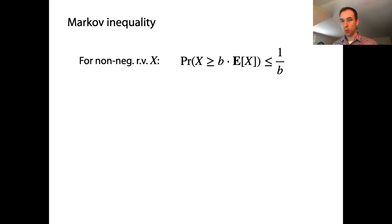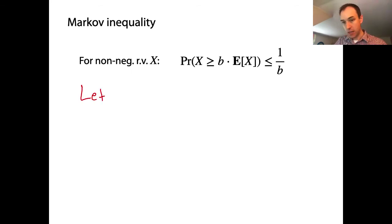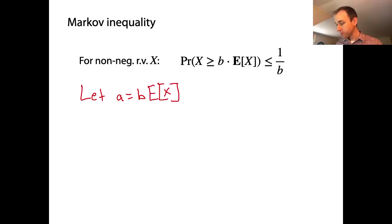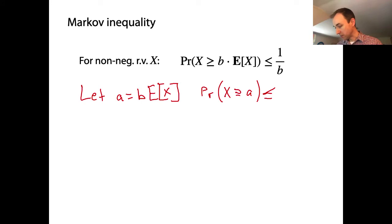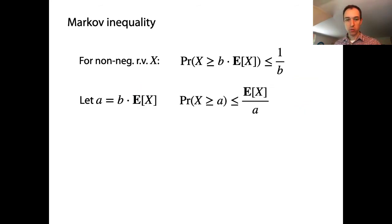This matches the way we were phrasing it before: no more than half the data can be twice the mean, and no more than a third of the data can be three times the mean. There's another popular way to write this down with a change of variable. Let a = b times the expected value of the random variable. Then the probability that X ≥ a is at most the expected value of X over a.